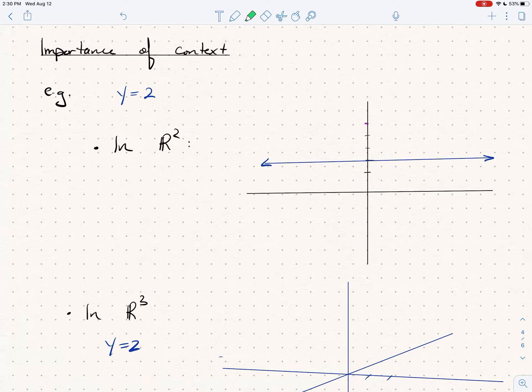I want to end this section with a remark about context and then real quickly we'll look at the distance formula and how that plays out for circles and spheres. So context: if we write down the equation y equals 2...